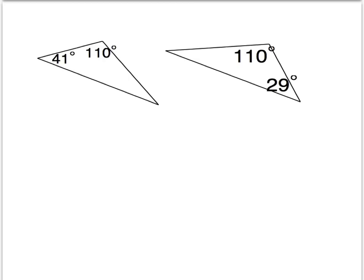How about these two triangles? Are they similar? At first glance it seems like no — they only have one pair of angles congruent: 110 is congruent to 110. However, the triangle sum theorem says that in a triangle all the angles have to add up to 180. So in this smaller triangle, we know 110 and 41, which means this angle must be 29 degrees, because 29 plus 41 plus 110 equals 180. So now we've established two pairs of angles that are congruent: 110 is congruent to 110, and 29 is congruent to 29.